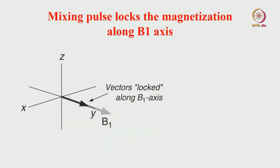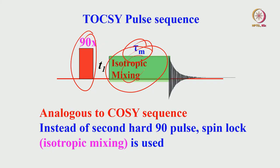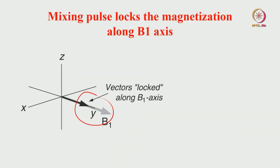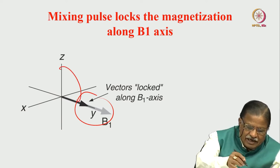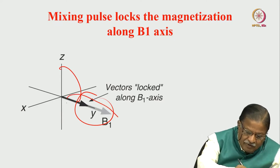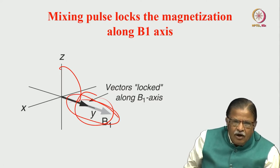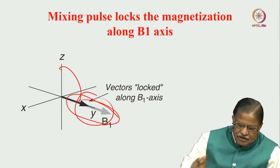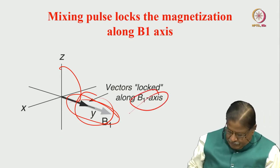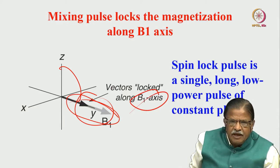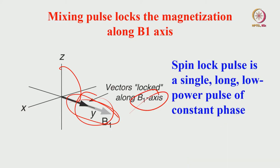How does this simple pulse sequence work? The mixing pulse is applied along one axis, and we say the spin systems are locked along that axis. If the spins are brought from the Z axis to, say, the Y axis, and RF power is applied along that axis, then all the spin vectors are locked along the RF axis — the B1 axis. This is what the mixing pulse does: it locks the spin system. The mixing pulse is a soft pulse — a very low power, constant phase, long duration pulse — of the order of 10 milliseconds, 20 milliseconds, 50 milliseconds, or 80 milliseconds. That is the spin lock pulse.